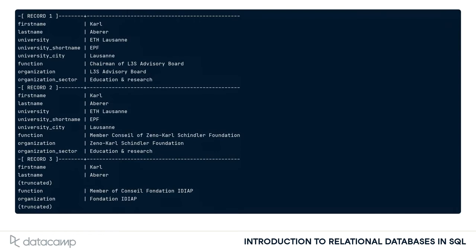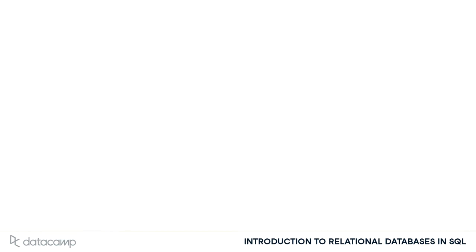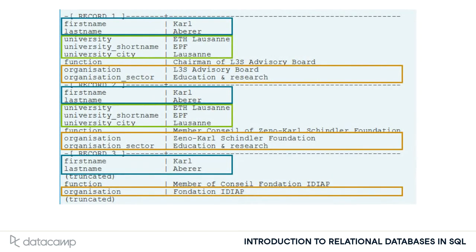The reason for this is that the table actually contains entities of at least three different types. The table stores professors, highlighted in blue, universities, highlighted in green, and organizations, highlighted in brown. There's also a column called function, which denotes the role the professor plays at a certain organization. More on that later.